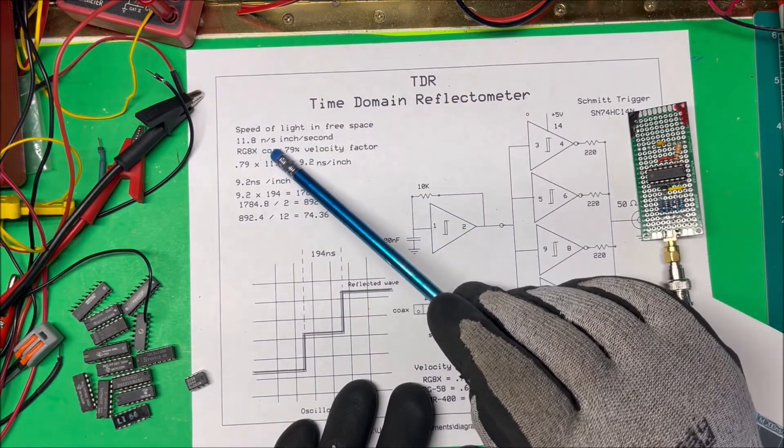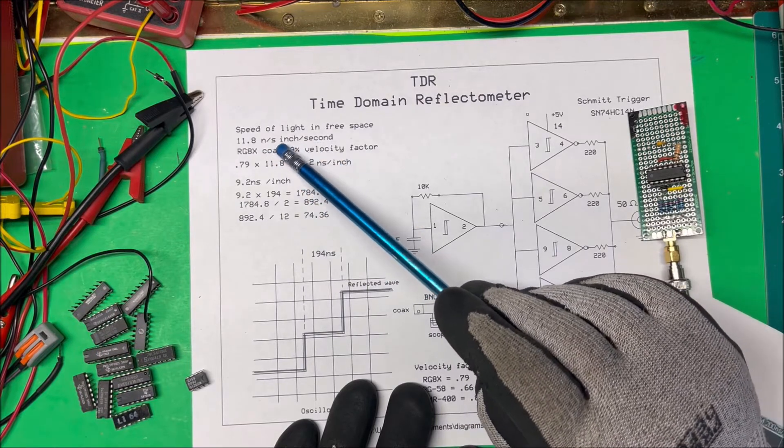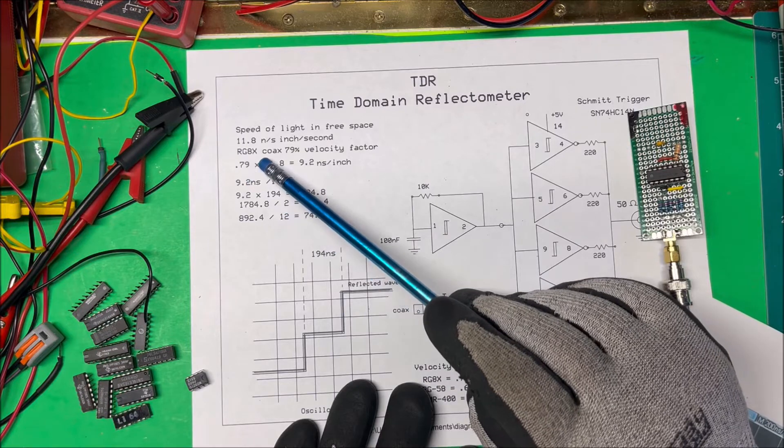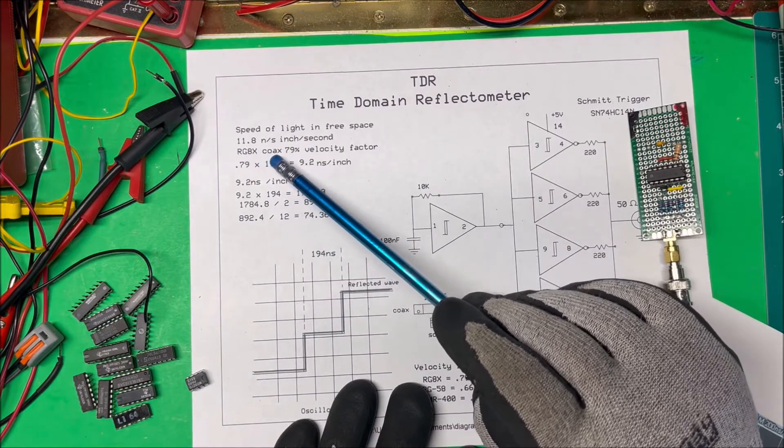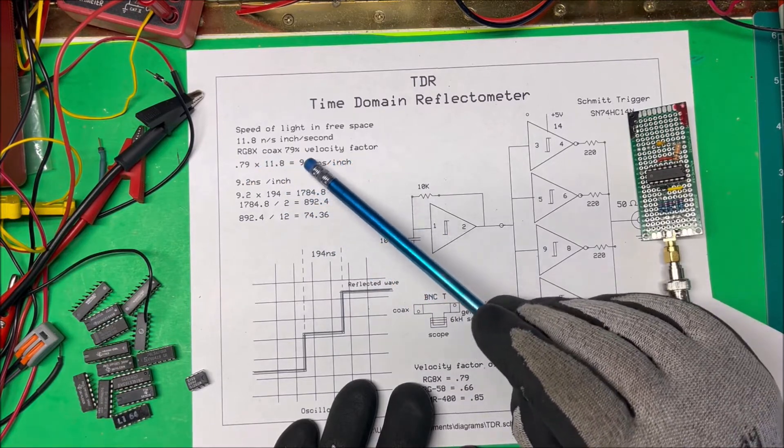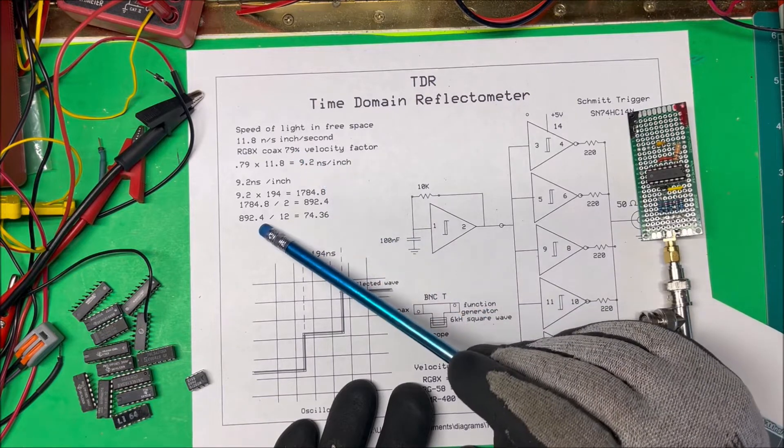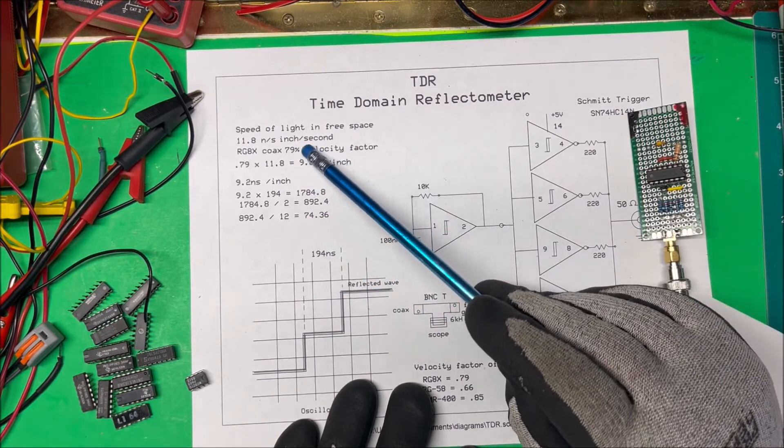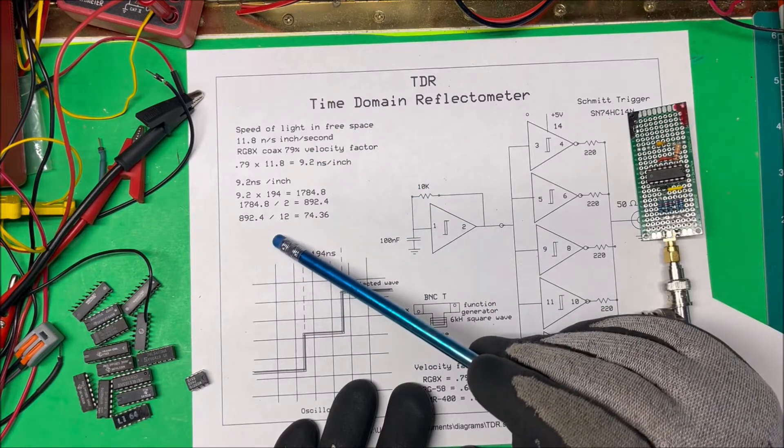The spec sheet for the RG8X coax says it has a velocity factor of 79%, so this wave travels in the coax 79% of the speed of light. Okay, so if we take the 79% times our 11.8, it comes out to 9.2 nanoseconds per inch.